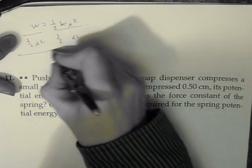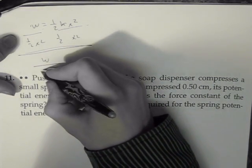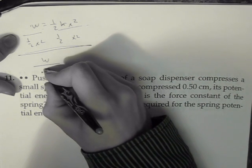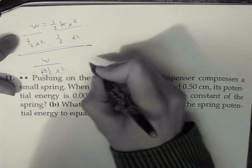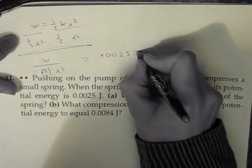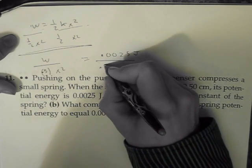So that would get us work divided by—well, we could just write 1 half or 0.5. I'll write 0.5 x squared. And that just equals 0.0025 joules, because that's work. And you divide that by 0.5.